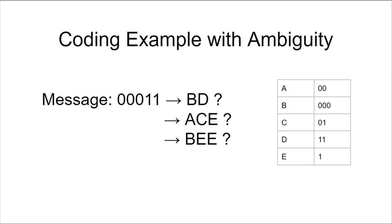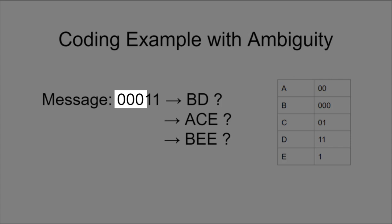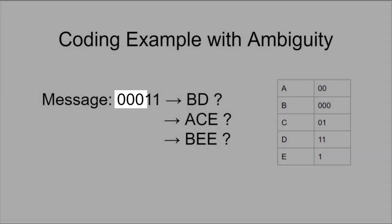But what's causing this ambiguity? Let's examine the message for a second. It starts off with three zeros. Now, that could be the letter B, or it could be the letter A and then the start of another letter.